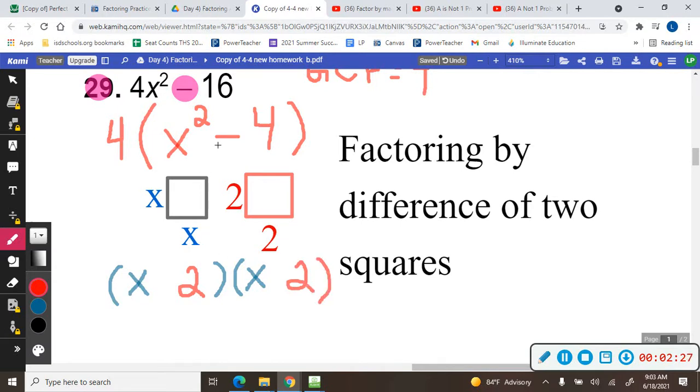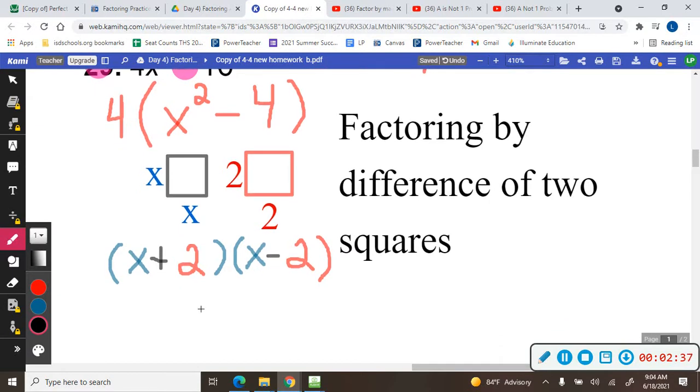Now because there's no middle term, there's no x term, you're going to make this one plus and this one negative. Because real fast, if I was to multiply this, I'd get x².